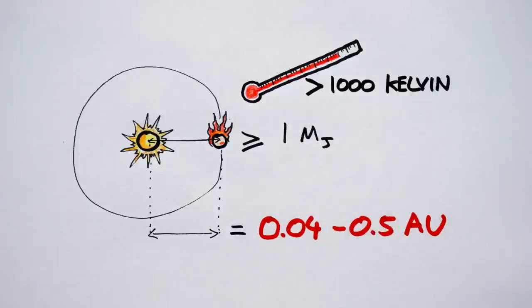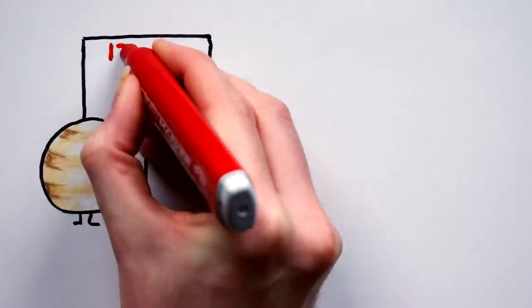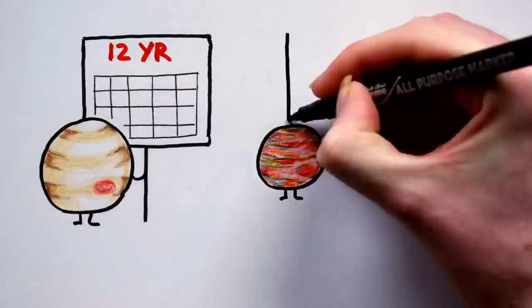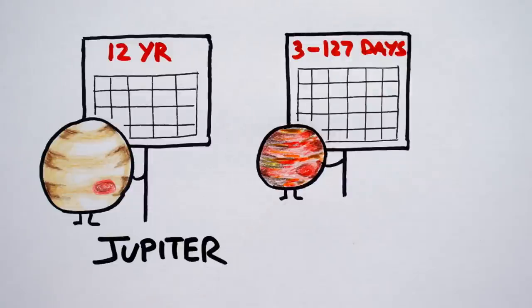However, they do tend to be slightly less dense than Jupiter. Jupiter's year is about 12 Earth years long, but in extreme cases these fireballs can zip around their parent stars in under a week.